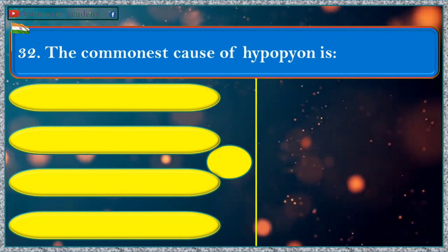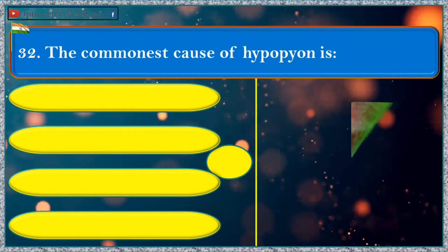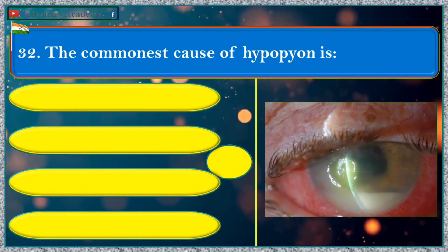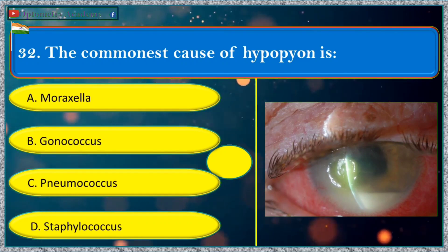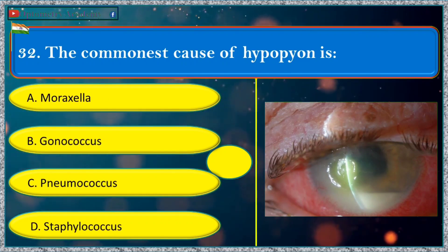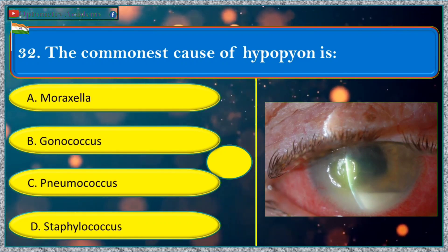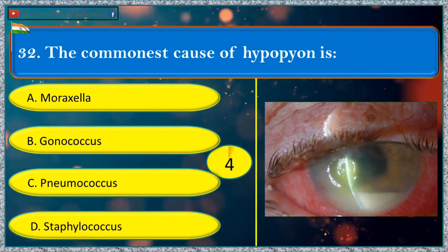The commonest cause of hypopyon is: a. Moraxella, b. gonococcus, c. pneumococcus, d. staphylococcus.